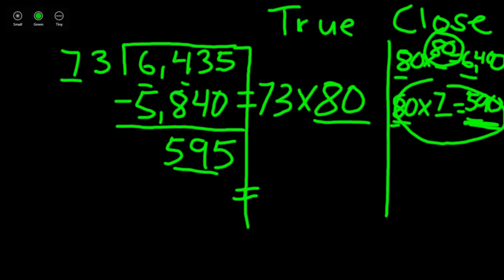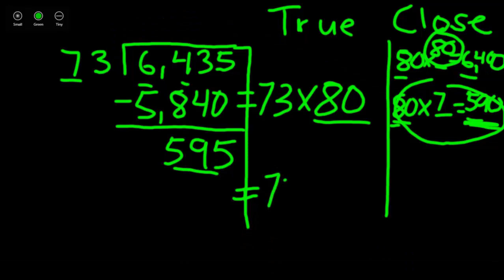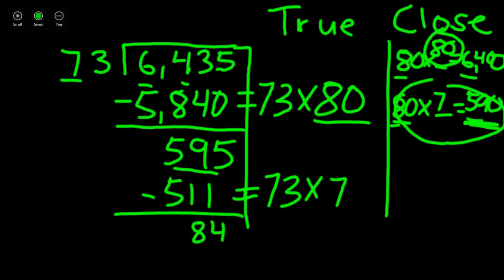Instead of using our 80, we're going to use the real number that we got that from, 73. For our true column, 73 times 7. When you do the multiplication to find the math, 73 times 7 is actually equal to 511. Let's subtract that from our dividend to find out how much we have left to divide. When you subtract, you find you have 84 left to divide.